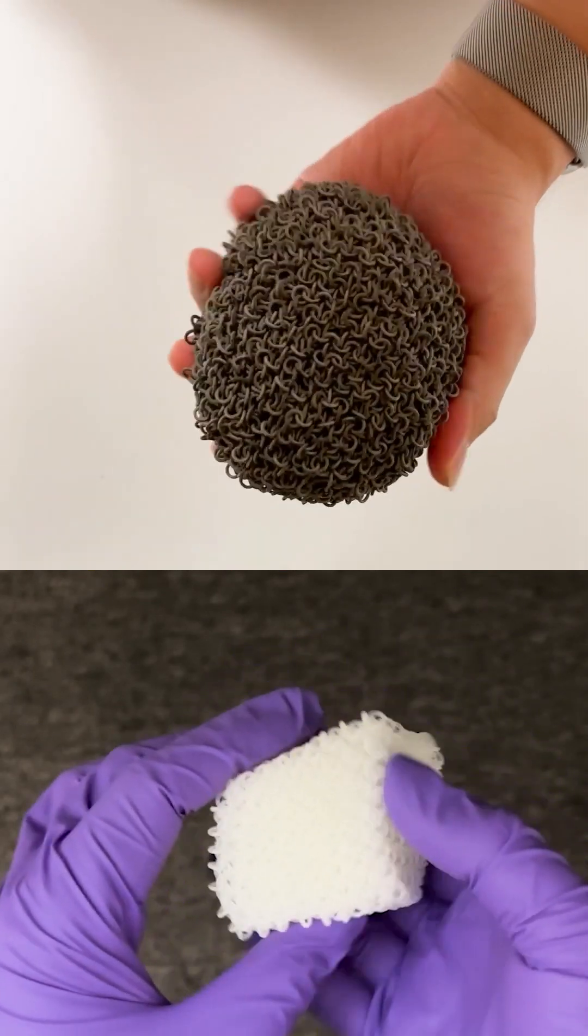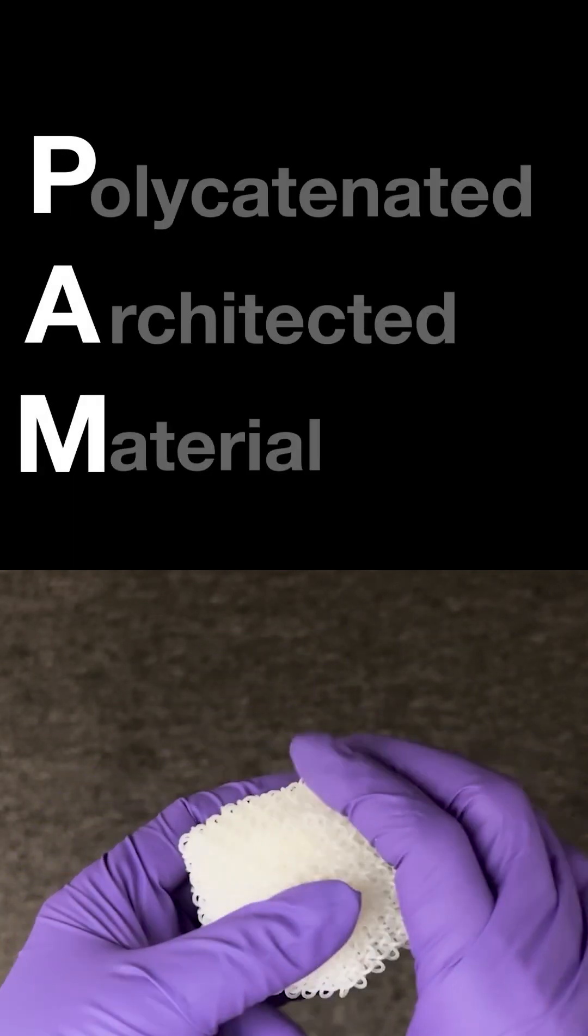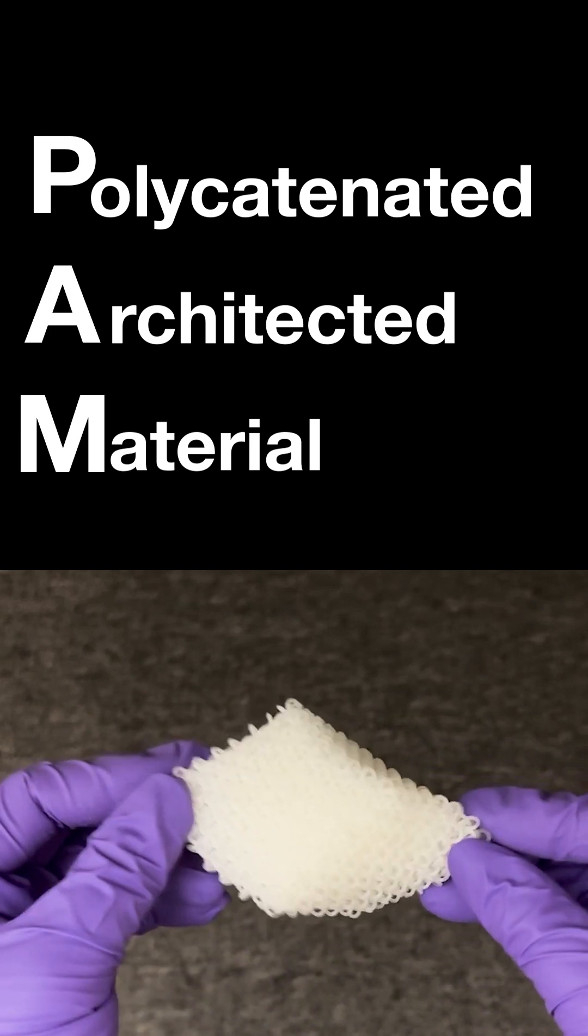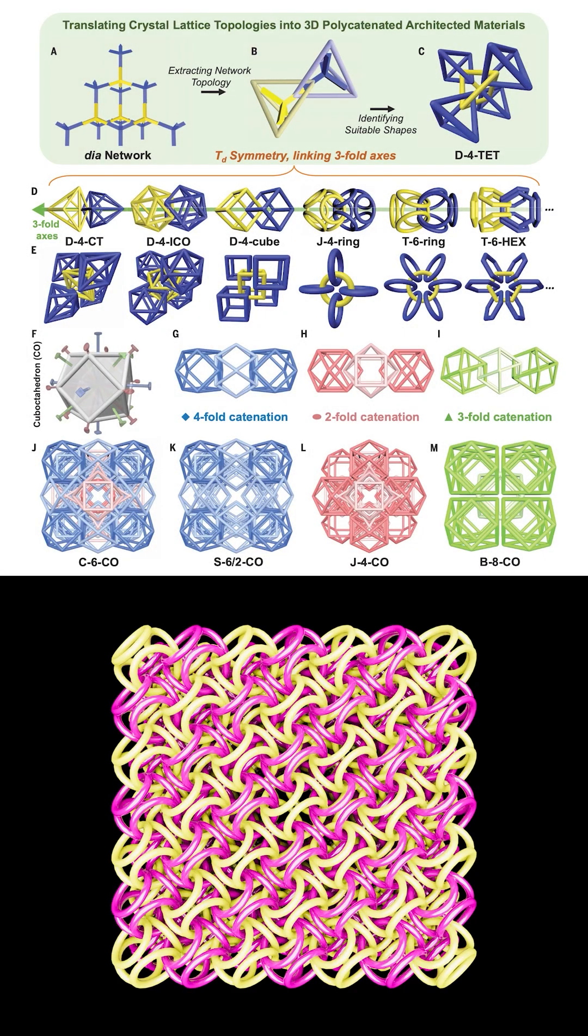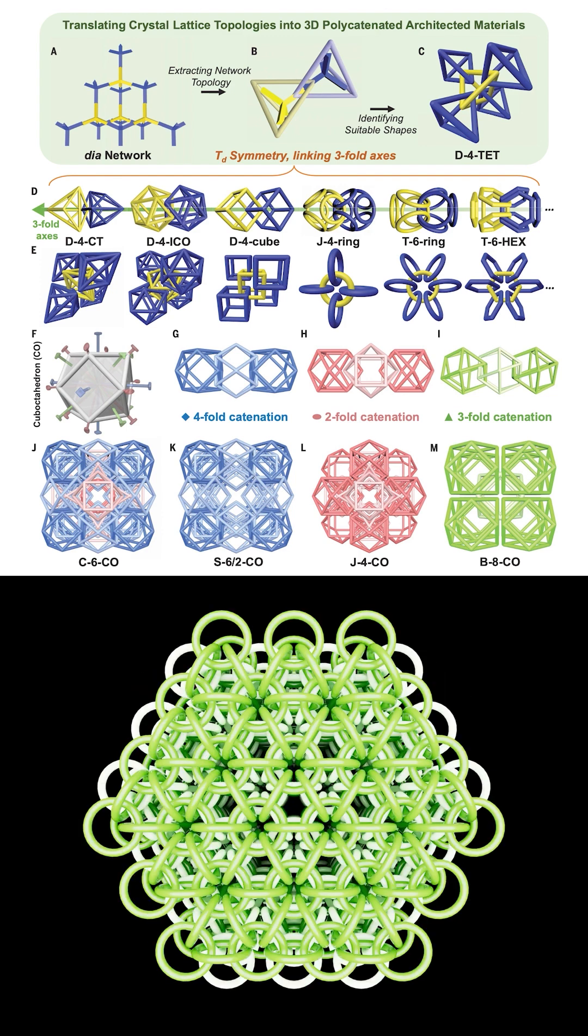Researchers at Caltech have created a new material called PAM, polycatenated architected material, made of cage particles and wireframe shapes like rings interlocked in different three-dimensional networks.